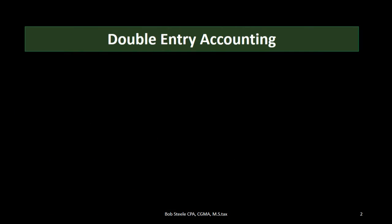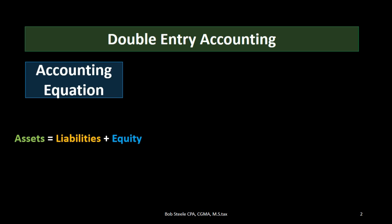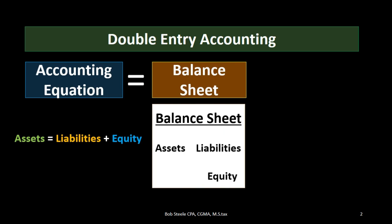When we think about the double entry accounting system we can think about it in a few different ways. One being the accounting equation — assets equal liabilities plus equity — usually the first way people think about it when learning financial accounting. That leads easily to the balance sheet, which is another way we can represent the double entry accounting system.